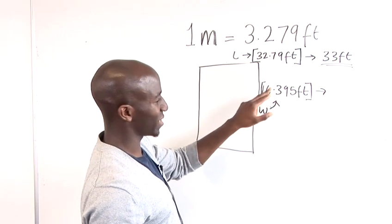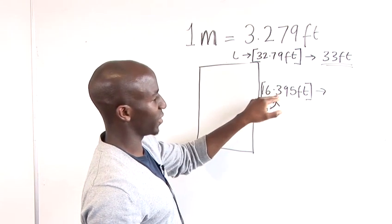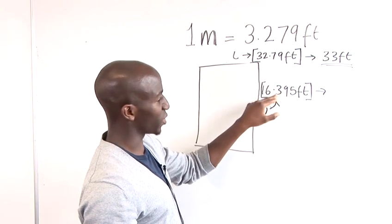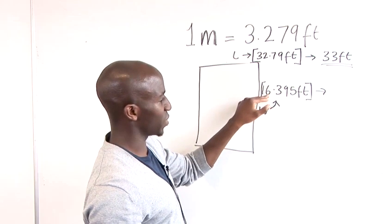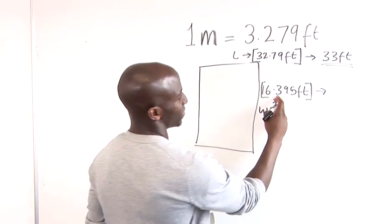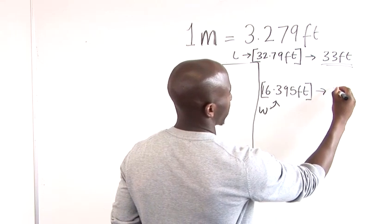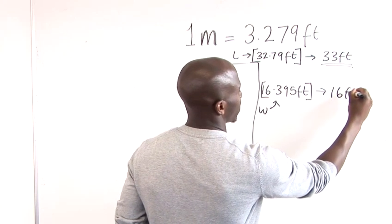And more specifically I should mention that if it is 5 or above. So if this was 5 then we would round that up to 17. But as you can see it's below 5 so we just take it as 16. So we've got 16 feet.